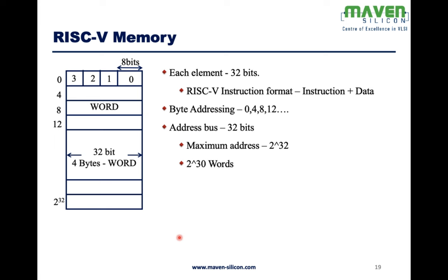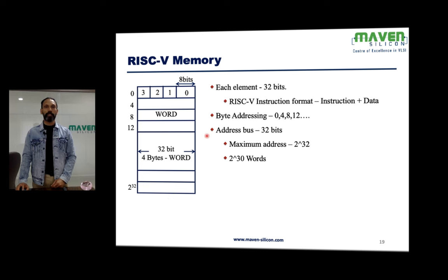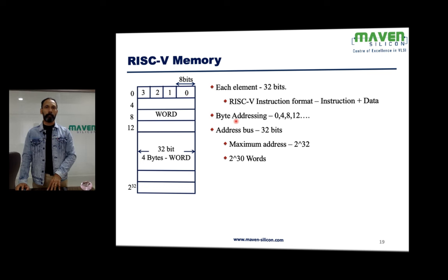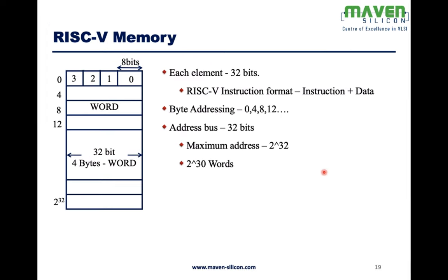RISC-V memory uses byte addressing, with each memory element being 32 bits (4 bytes). Addresses increment as 0, 4, 8, etc. The address bus width is 32 bits, so it can address a maximum of 2^32 memory elements.